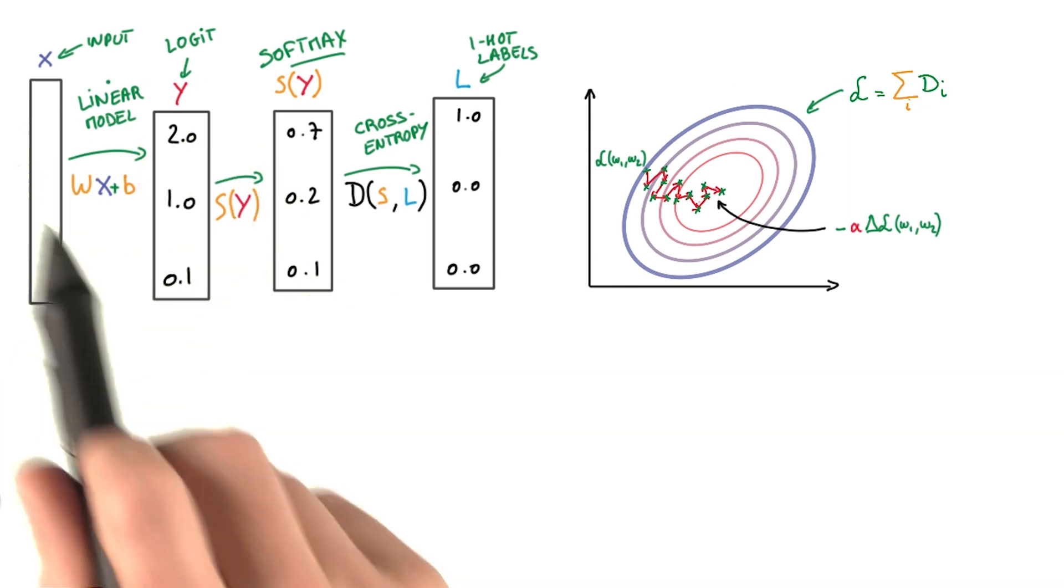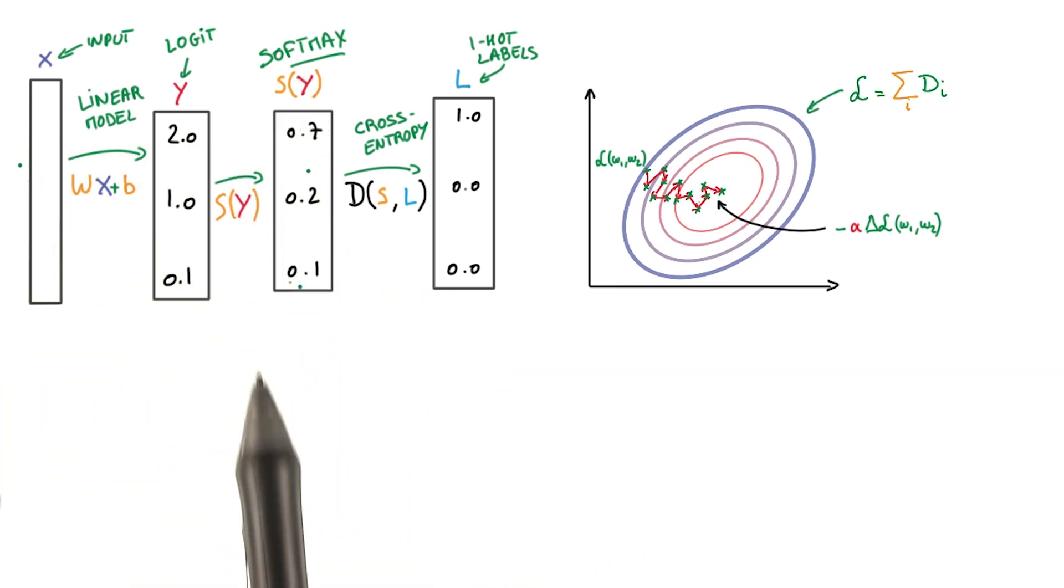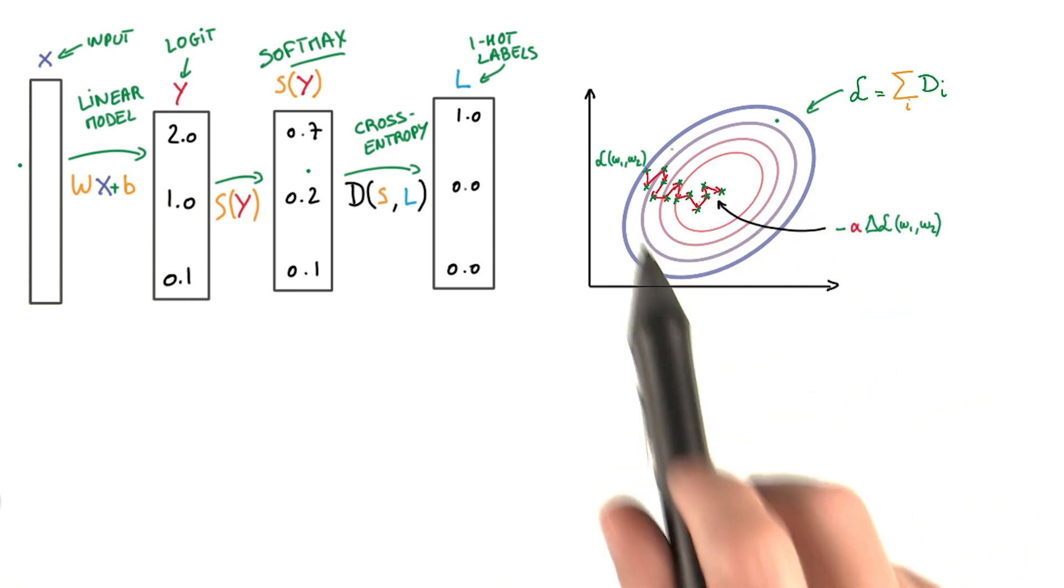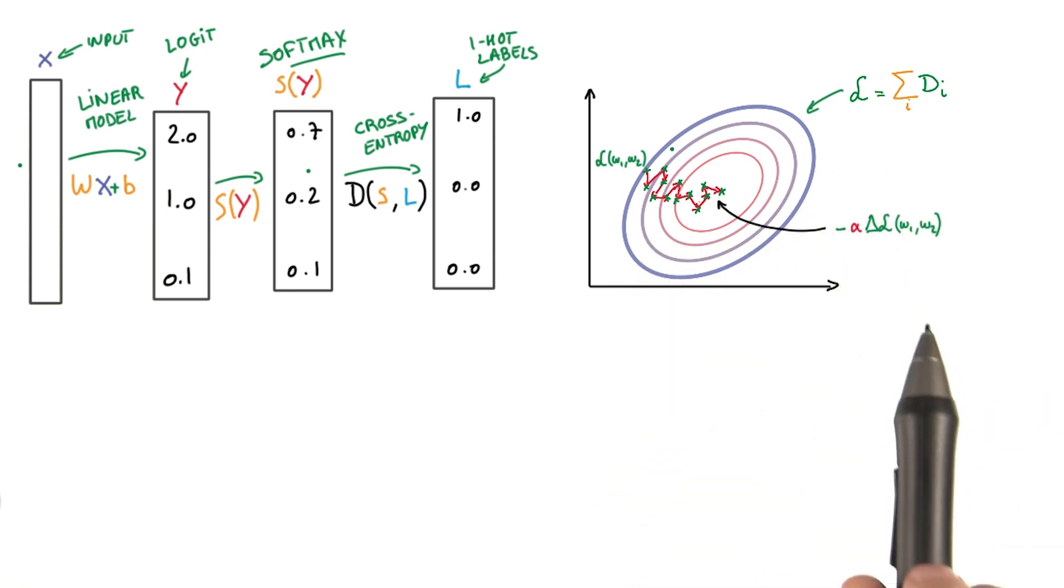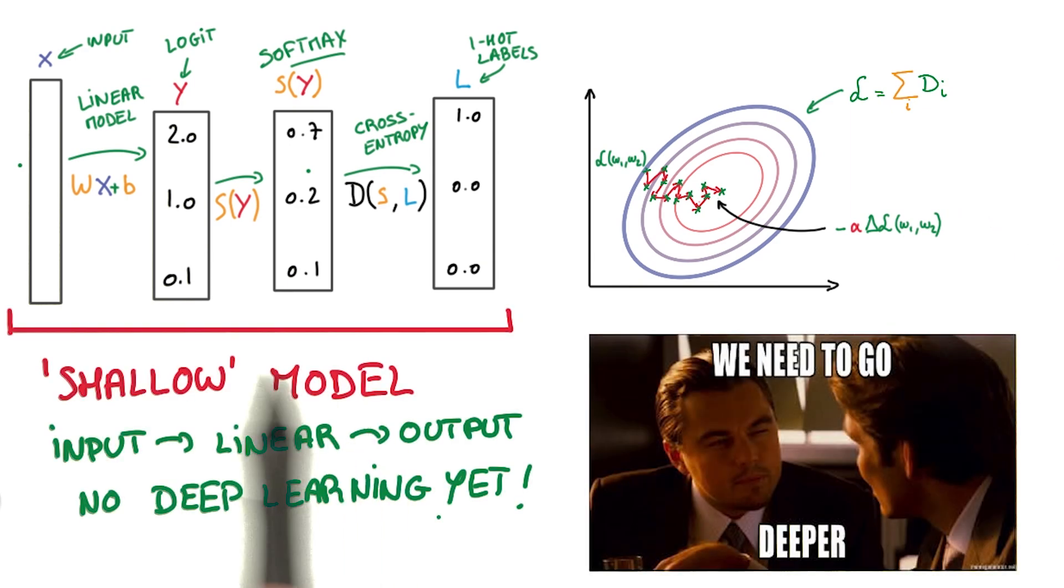So let's recap. We have this very simple linear model, which emits probabilities, which we can use to classify things. We now know how to optimize its parameters on lots and lots of data using SGD and its variants. It's still a linear, shallow model, though. But now we have all the tools that we need. It's time to go deeper.